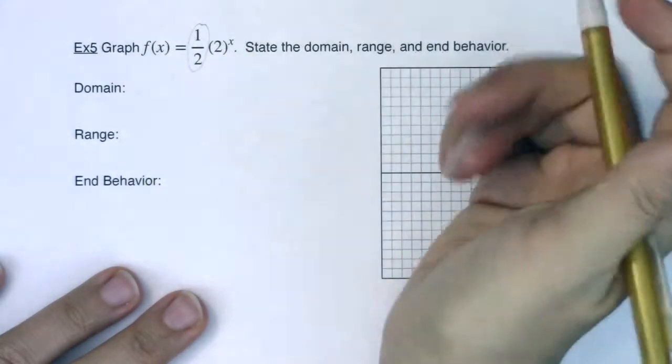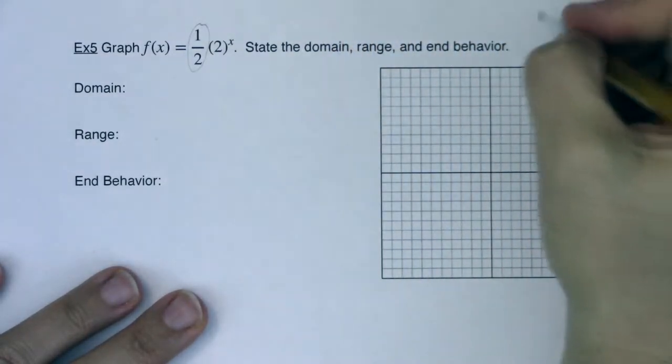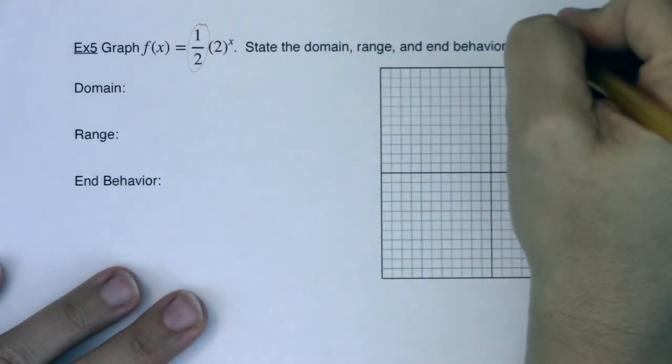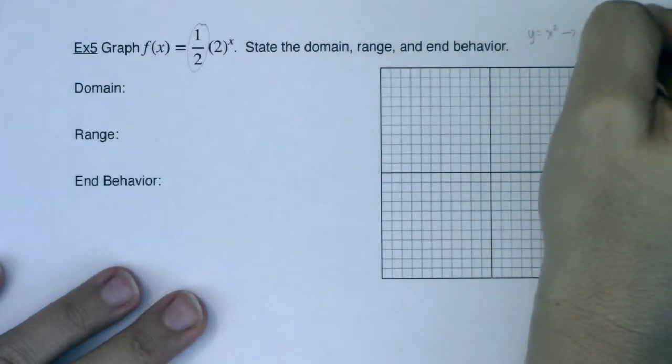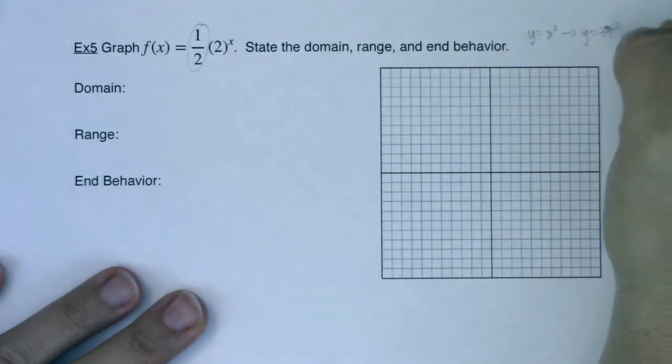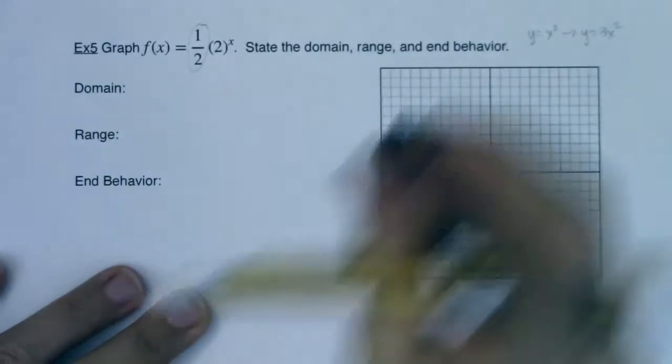Anytime you have a number larger than 1, we're going to stretch our y values. Some of the more familiar examples are like if you had y equals x squared, and then you went to y equals 3x squared. This is your basic parabola. This is an even skinnier parabola because the y values are 3 times as large here. But we only have y values that are half as large on this one.